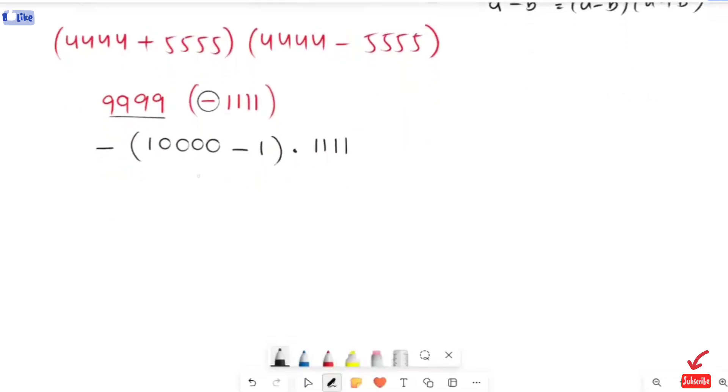Now, the next expression I will get: here I'm going to multiply this 10,000 with 1111, and then this 1 with this 1111. So the next expression we will get is 11,110,000 minus 1111.